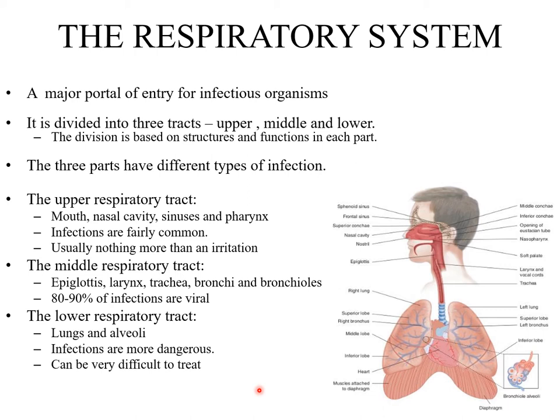In comparison, the upper respiratory tract has normal flora or microbiota. Lower respiratory tract infections may be difficult to treat. In the upper/lower classification, the upper includes the mouth, nasal cavity, sinuses, pharynx, epiglottis, and the part of the larynx above the vocal cord. The part of the larynx below the vocal cord, trachea, bronchi, bronchioles, lungs, and alveoli are all considered within the lower respiratory tract.